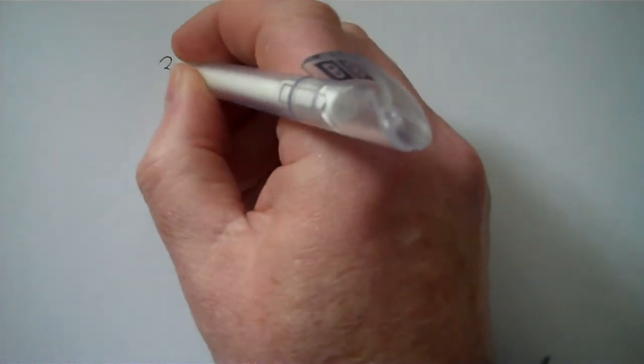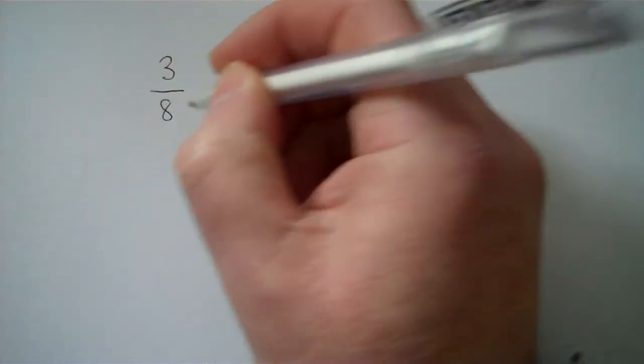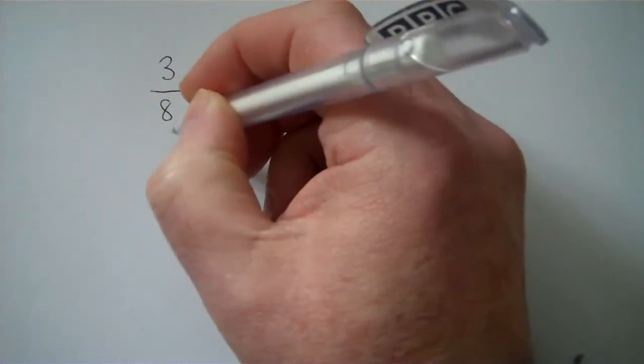I'm just going to remind you how to turn a fraction into a decimal. So if we take the fraction 3 eighths, how do we turn that into a decimal?